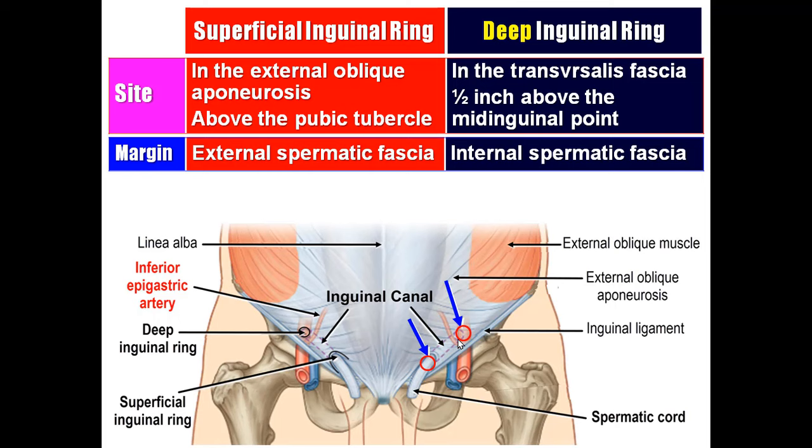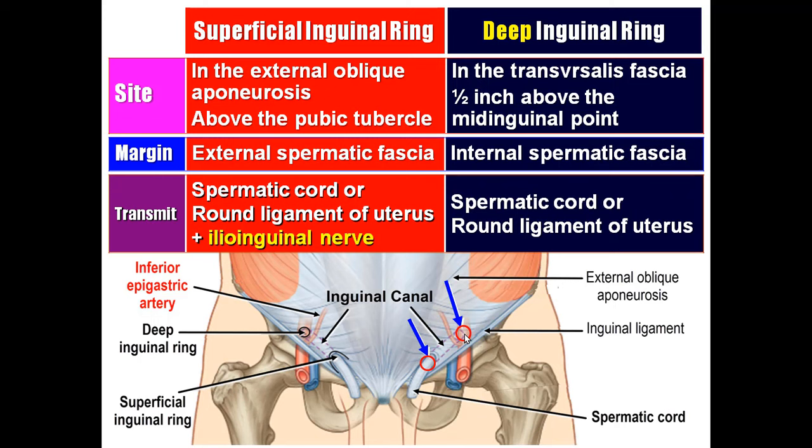The margin of the superficial inguinal ring gives an extension around the spermatic cord called the external spermatic fascia. The margin of the deep inguinal ring gives an extension called the internal spermatic fascia. The superficial inguinal ring transmits the spermatic cord in the male, or the round ligament of the uterus in the female, plus the ilioinguinal nerve. The deep inguinal ring transmits only the spermatic cord or the round ligament of the uterus.